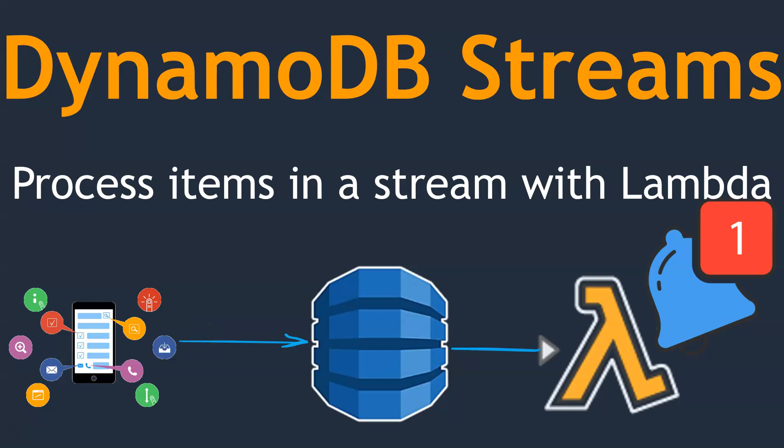Hello folks, welcome to our channel. Today we are going to see how to create a DynamoDB event stream processor. Think of a scenario where you have an enterprise and there is a new employee added. You want to add that employee into the DynamoDB table and trigger some downstream business processes — for example, the laptop process, the badge process, the desk process, and access management.